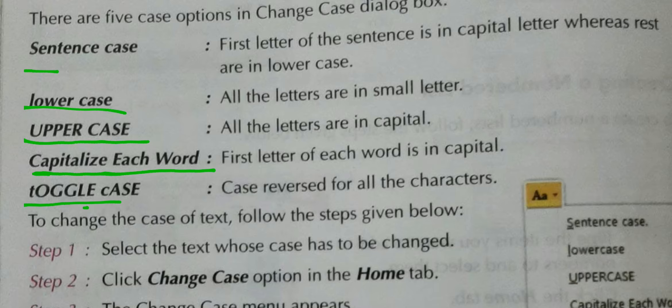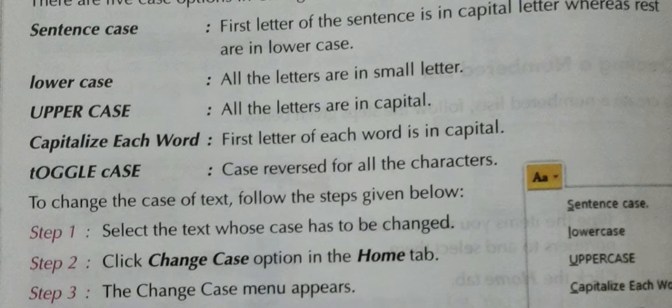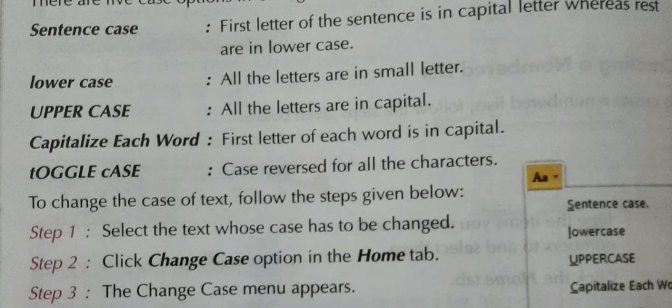These are the five case options and the differences in each: Sentence Case — first letter should be capital. Lower Case — all letters in small. Uppercase — all letters in capital. Capitalize Each Word — first letter of each word in capital. Toggle Case — your sentence will be in a mixed version of the text.